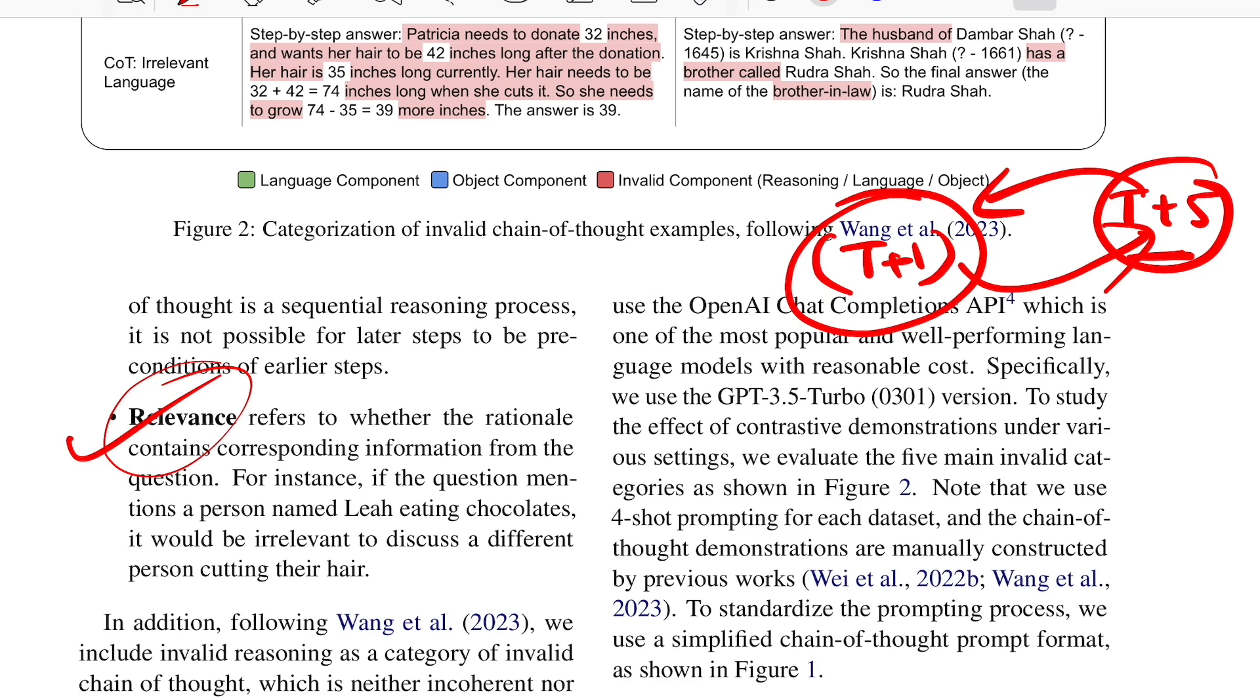The second one is relevance. The idea is that the rationale you're trying to give is relevant to the question that was asked for. For example, if the question says a person named Lee was eating chocolates, and the argument or rationale you give as part of the thought process is that there was a person cutting hair - that's clearly not at all relevant to the question that was asked for. The elements have changed, the context has changed. So that's again kind of a negative sample that you can give to your system.